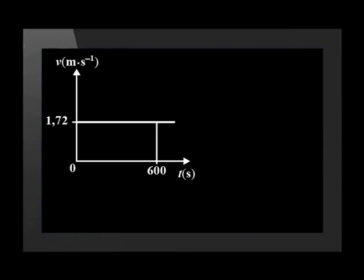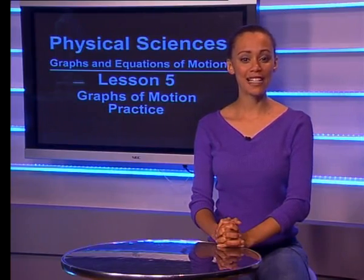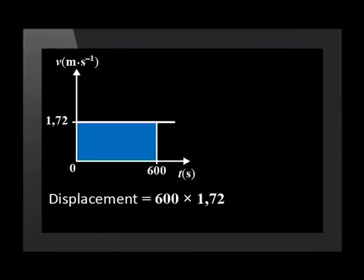Since the velocity of the boy is constant, let us start with the velocity versus time graph. The velocity-time graph is a straight horizontal line at 1.72 meters per second. We use the area under the graph to calculate the total displacement of the boy. Multiply the time taken, 600 seconds, by the velocity, 1.72, so the total displacement of the boy is 1032 meters.